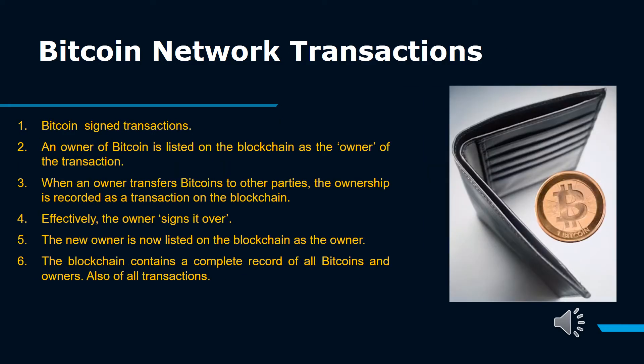A transfer of Bitcoins from one Bitcoin user to another — containing an embedded script — a Bitcoin transaction is generated in a digital wallet and transmitted to the Bitcoin network. It is validated by a Bitcoin node and added to the blockchain-based ledger by a miner. An owner of Bitcoin is listed on the blockchain as the owner of the transaction. When an owner transfers Bitcoins to other parties, the ownership is recorded as a transaction on the blockchain. Effectively, the owner signs it over. The new owner is now listed on the blockchain as the owner. The blockchain contains a complete record of all Bitcoins, owners, and all transactions.